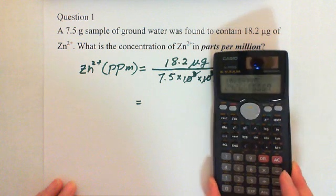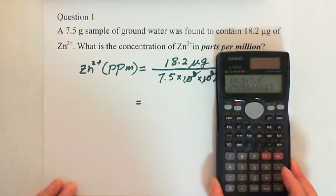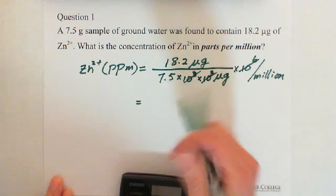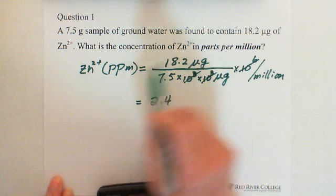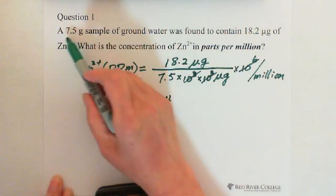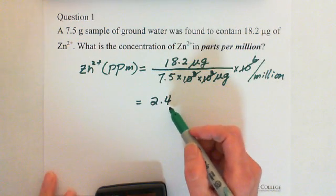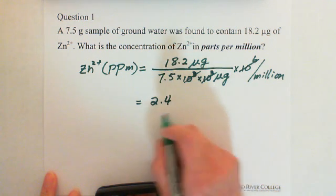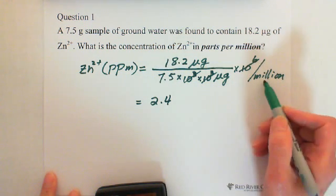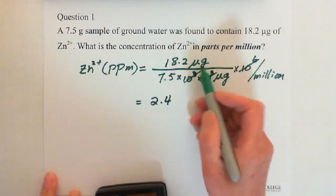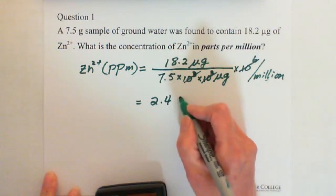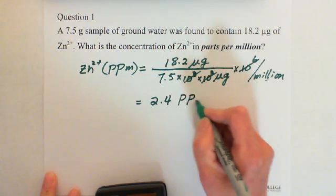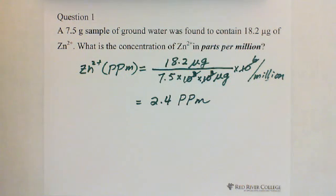We get 2.43. Because we have three significant figures and two significant figures, we round to two significant figures: 2.4. The units cancel out, and multiplying by per million gives us parts per million. So the concentration of zinc ions is 2.4 ppm.